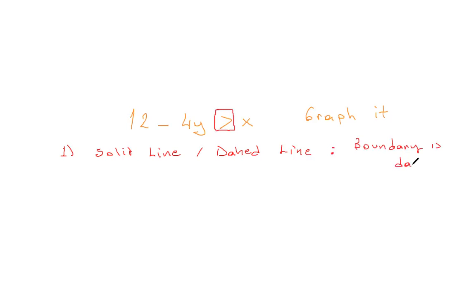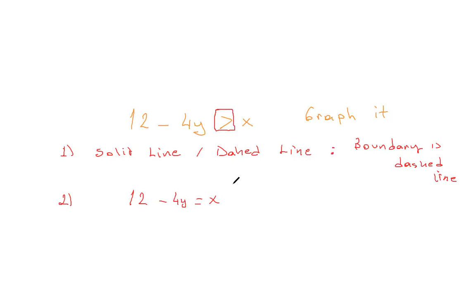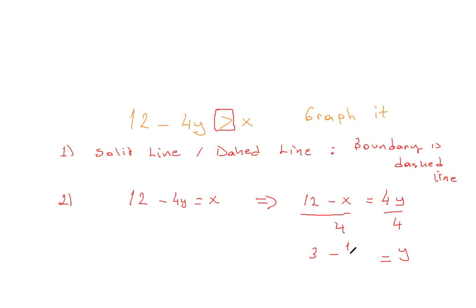Good. Secondly, what am I going to do? Subtract 12 on both sides. Here's an easy way for students: think of it like an equation question. I'm not saying this IS an equation question, but think of it that way. So you can write: 12 minus x equals 4 times y, and dividing by 4 gives y equals 3 minus one-quarter x.